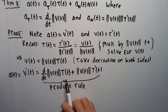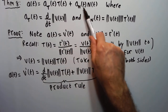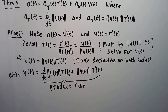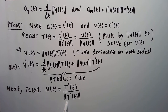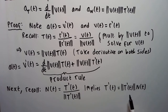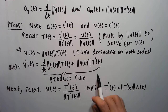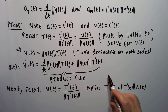Next, recall that the principal unit normal vector N is equal to T prime divided by the magnitude of T prime. We can solve for T prime by multiplying both sides by the magnitude of T prime, giving us T prime equals the magnitude of T prime times N. We can then substitute this in place of T prime in our expression.